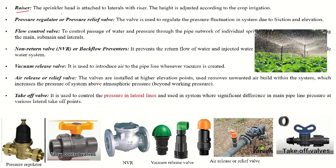The riser is the component by which the sprinkler head is attached to the lateral. From the lateral pipe, the riser is attached with the sprinkler nozzle. The riser is located above the crop height, and the height is adjusted according to the crop type and irrigation requirement.